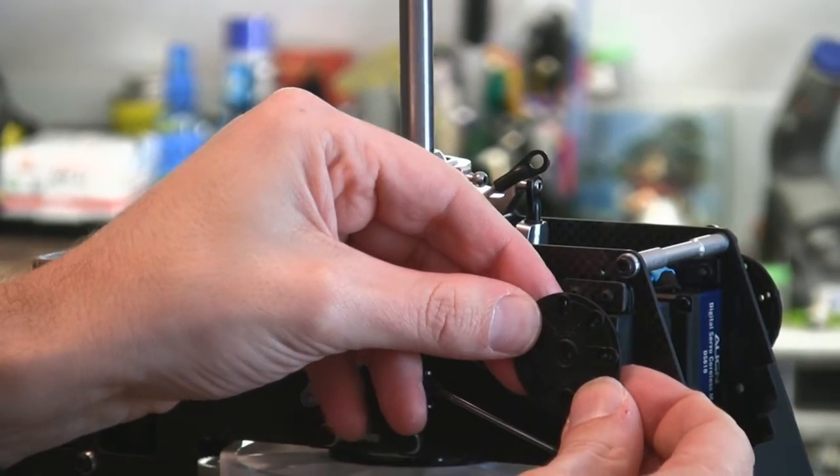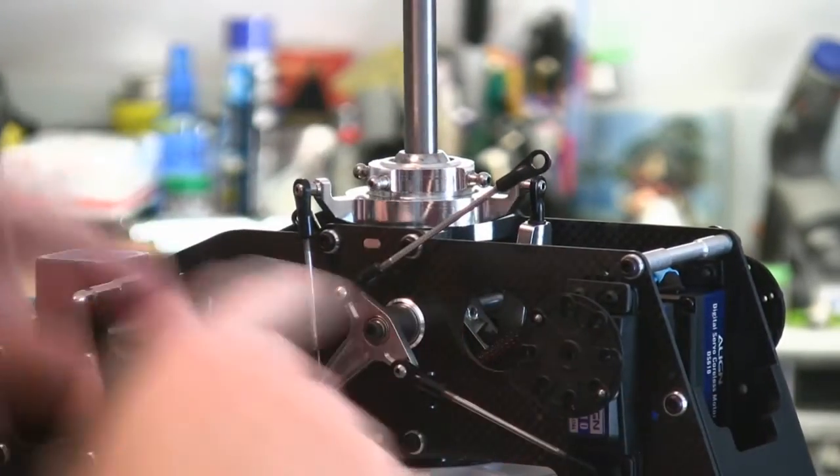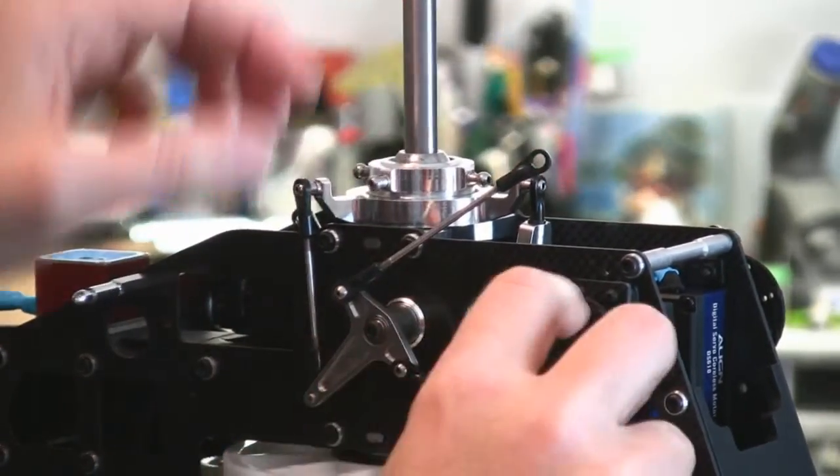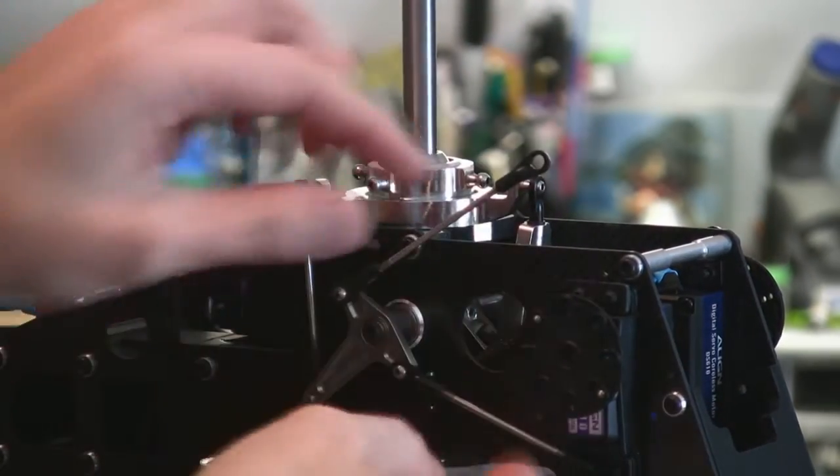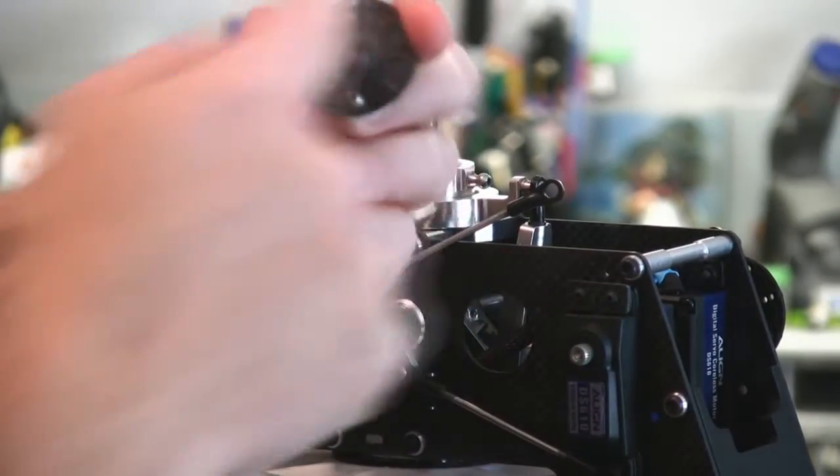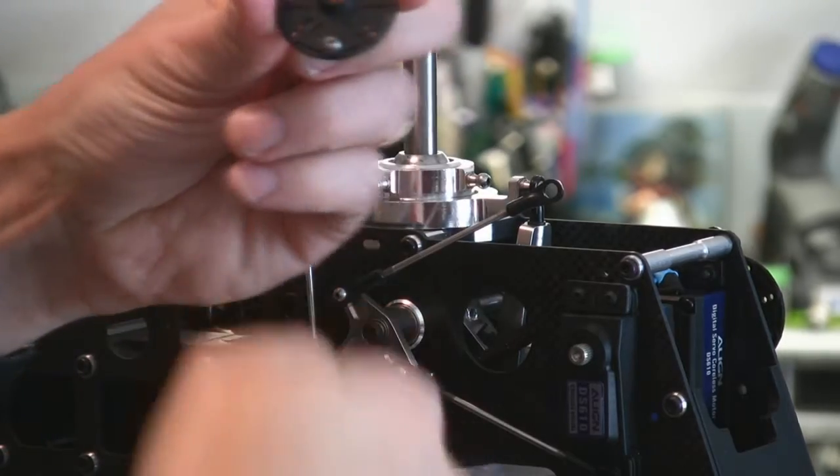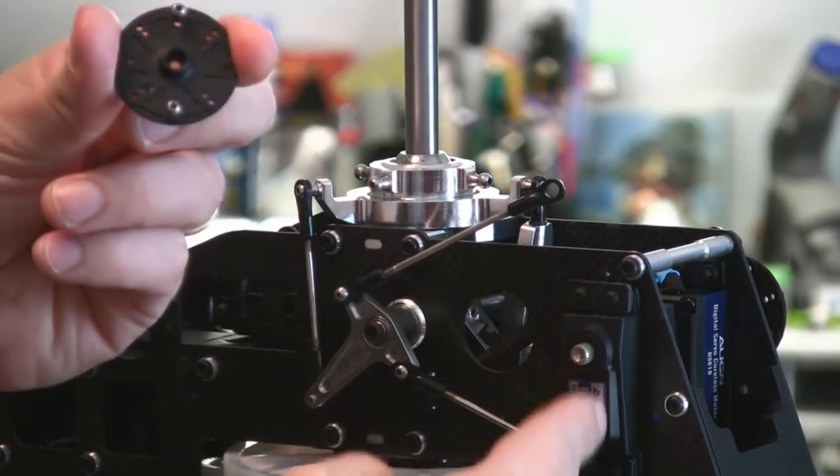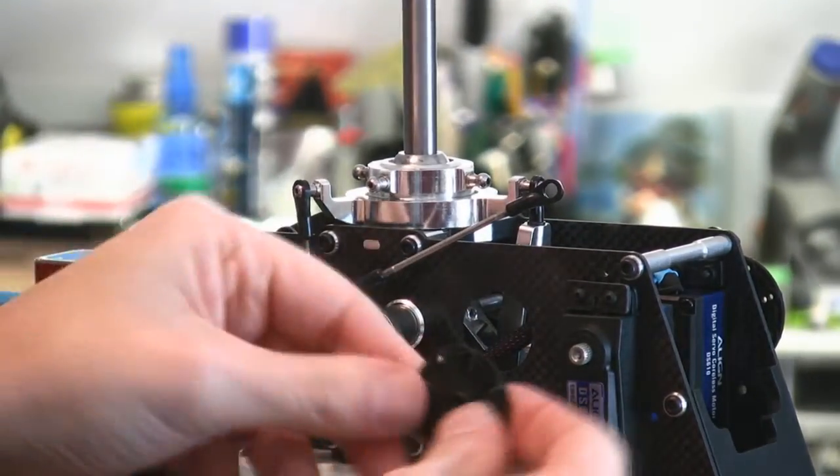So actually I need to move these ball links over one. So what I'm going to do is I'm going to do the same thing for all three servos. Put the ball links on, screw the servos on. Make sure that this line that goes between the ball links, like if you drew an imaginary line straight down there, then I would want that line to be straight down the middle of the servo. So that's what I'm going to do.